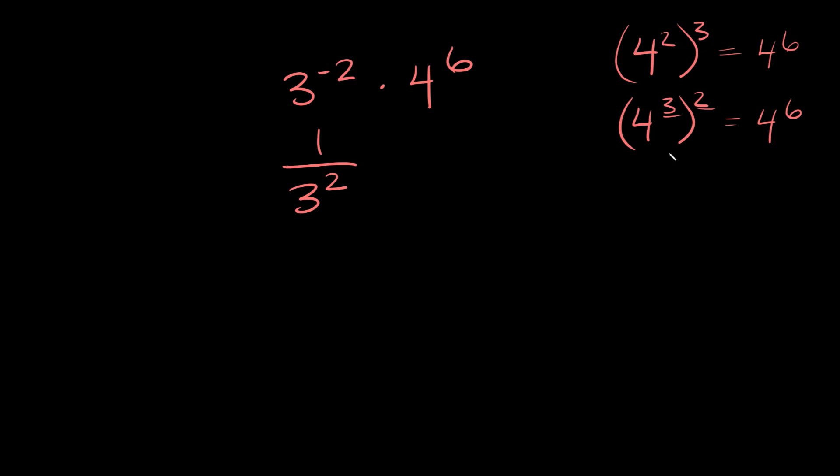Now which one do you want to use in this case? Well in this case we would want to use this one, because we have this exponent, the 2 out here. Same thing over here, we have a 2 out there. So we're going to change this 4 to the 6 to this right here. So we're going to multiply instead by 4 cubed and then with the squared exponent on the outside, because we have a square exponent out here also.